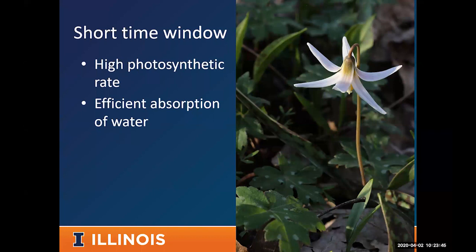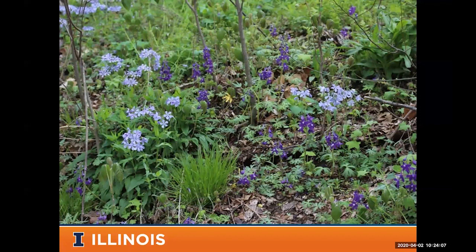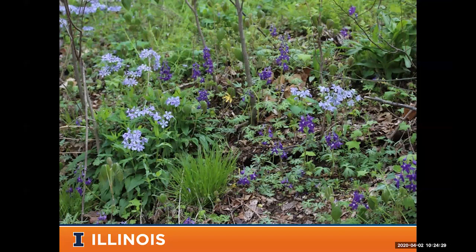They also have a very high photosynthetic rate and very efficient water absorption — they don't need to grow many roots or leaves because they're so efficient at it. Their foliage is very efficient at photosynthesizing and taking up nutrients. So as soon as the temperature warms up in spring, these plants put on growth really fast — quick vegetative growth, then flowers, all in a very short period of time.